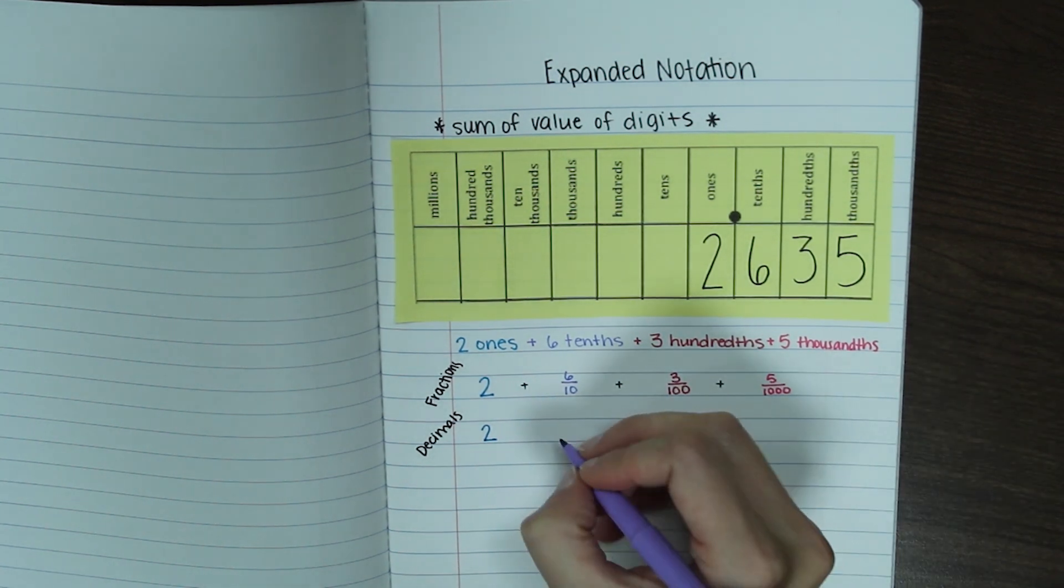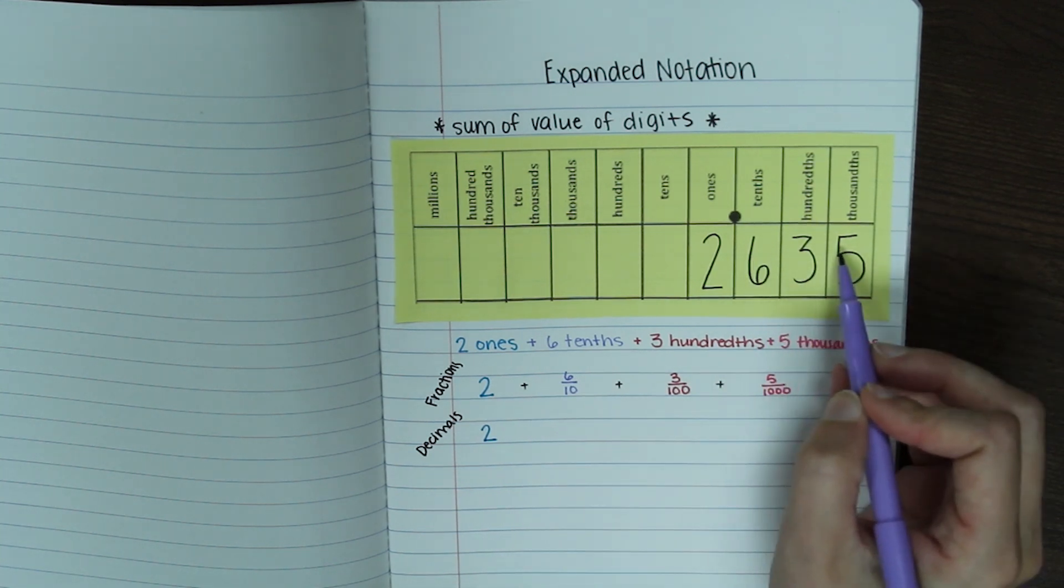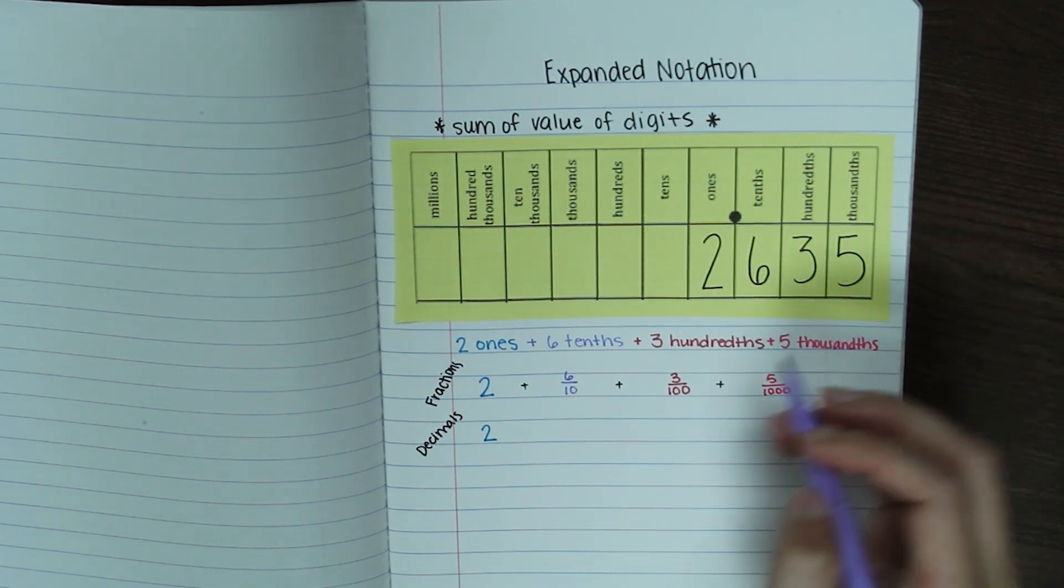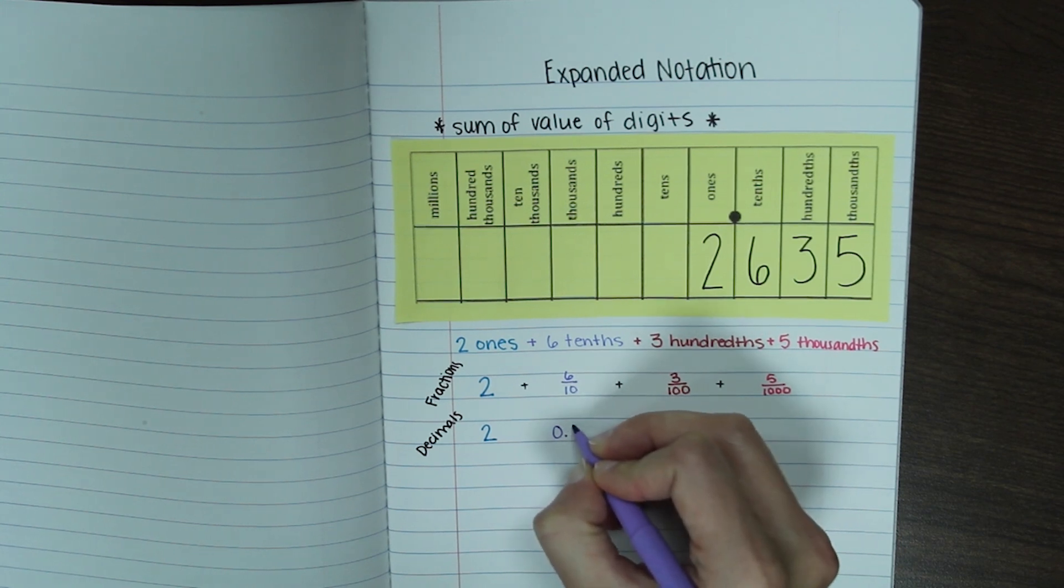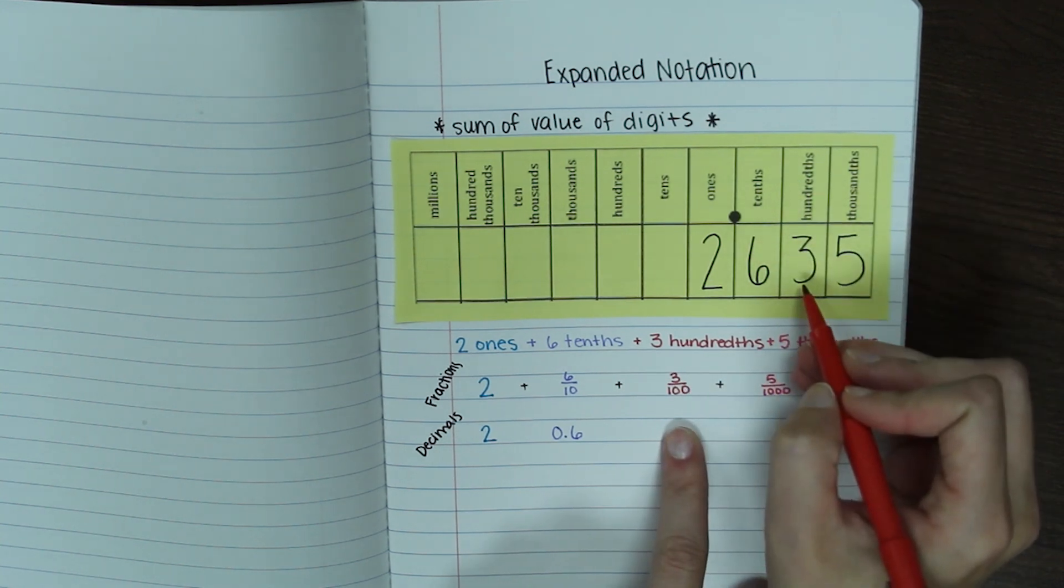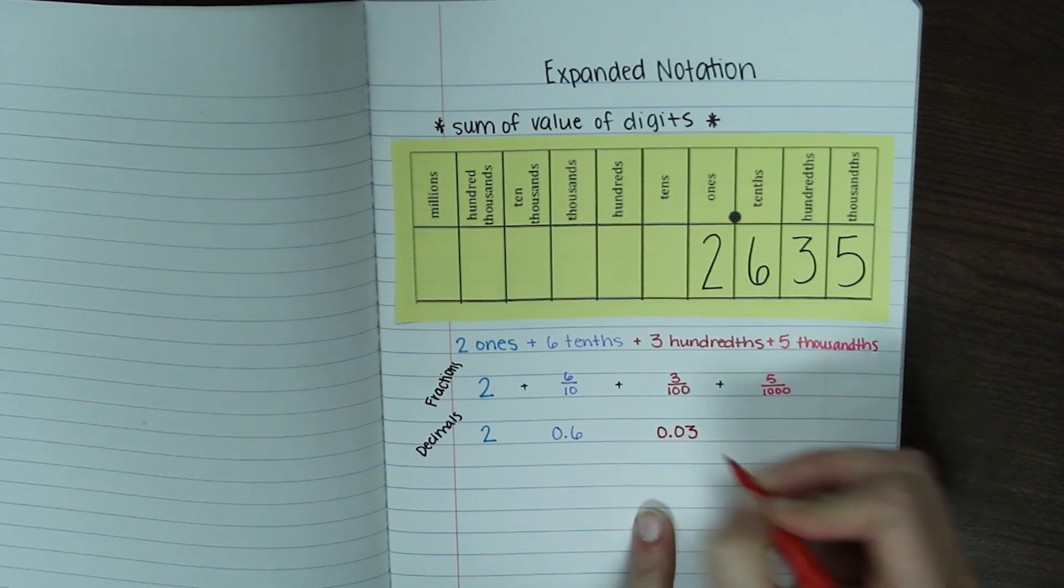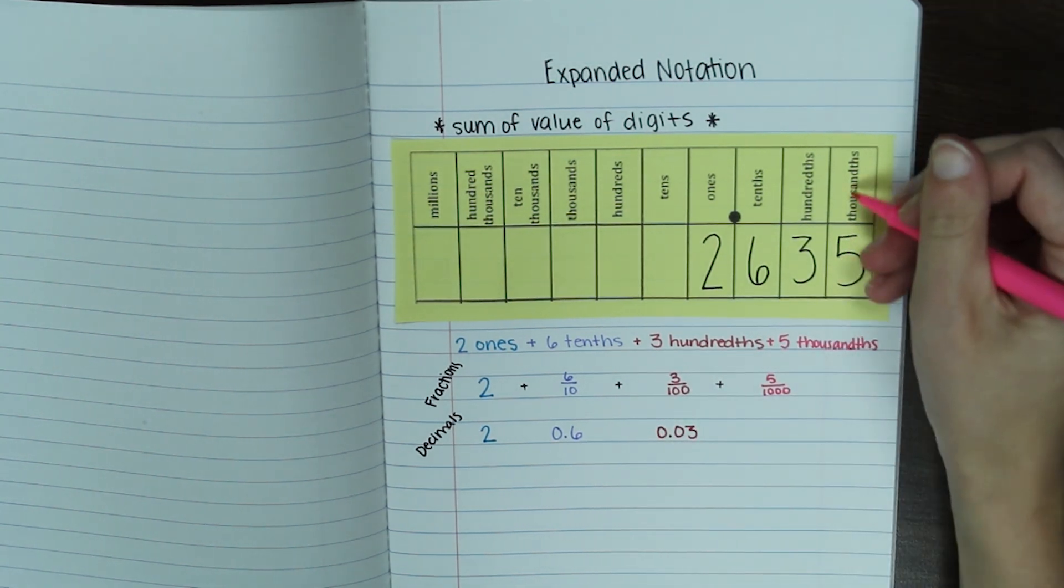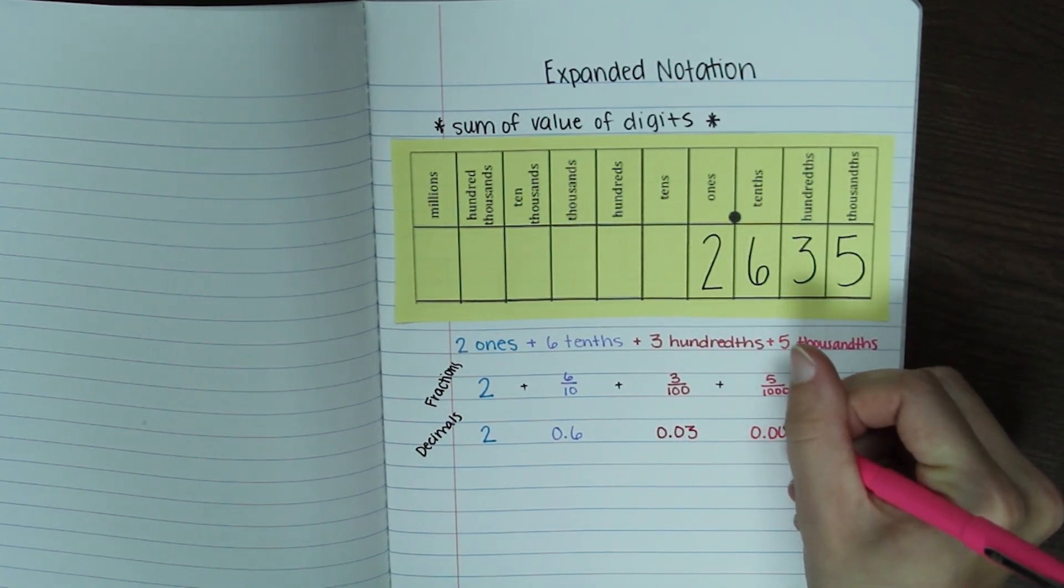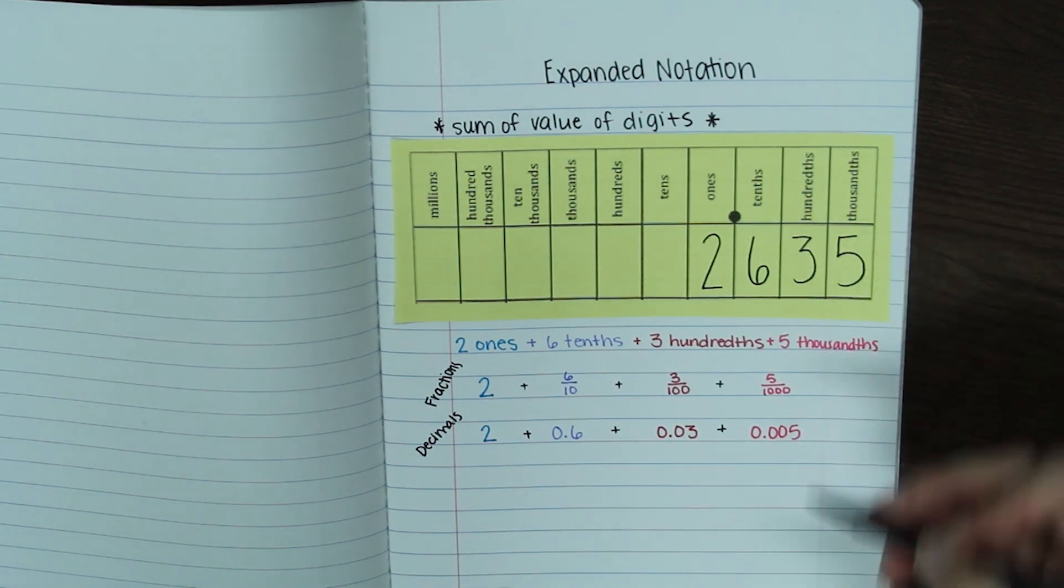Our six tenths we can write as a six in the tenths place. If you forget where that is, look up at your place value chart. It'll be exactly like this number with a six in the tenths place, but everything else is a zero. So we're gonna write zero in the ones place, six in the tenths place. Our three hundredths will do the same thing. Keep your three in the hundredths place. Everything that comes before it was a zero. Zero, zero, three hundredths. And five in the thousandths place, there'll be two zeros after that decimal. All these things added together equals your original number.